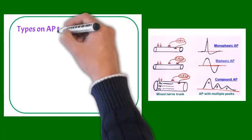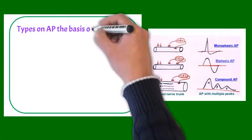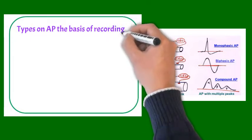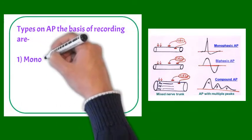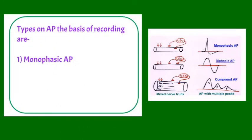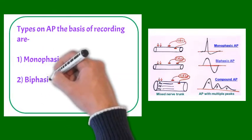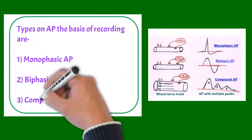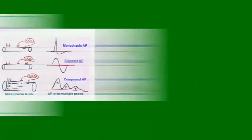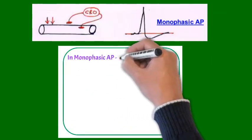First, types on the basis of recording, by which action potential can be of three types. First is monophasic, in which only one predominant phase is present. We are having two phases biphasic, and when it is recorded by nerve trunk, it is compound action potential.